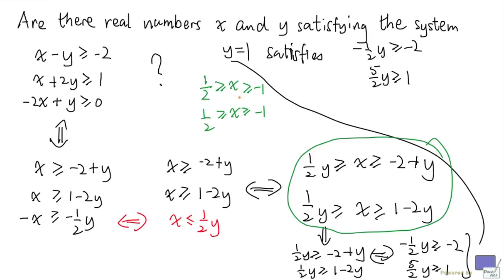And so, x can be anything between minus 1 and one half. And I'll just pick x equal to 0. So combining this with the fact that y is equal to 1, I can say that (x, y) equal to (0, 1) is a solution to the system of linear inequalities.